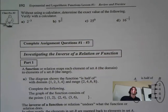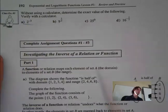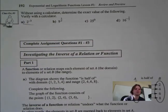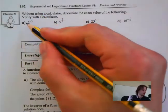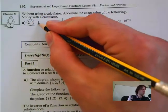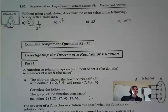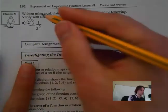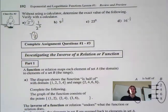Class example 3: without your calculator, determine the following. First one — use the integral rule: that's 1 over 2 to the 3. What is 2 to the 3? 2 times 2 is 4, times 2 is 8. So the answer is 1 over 8.